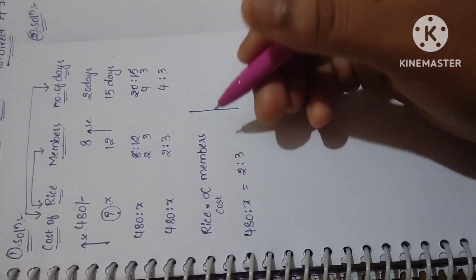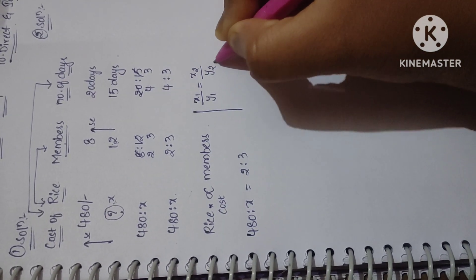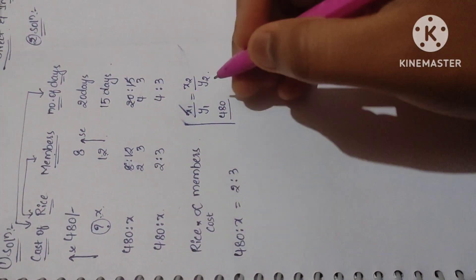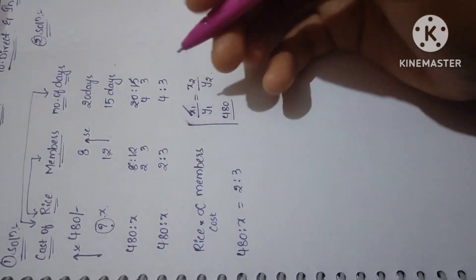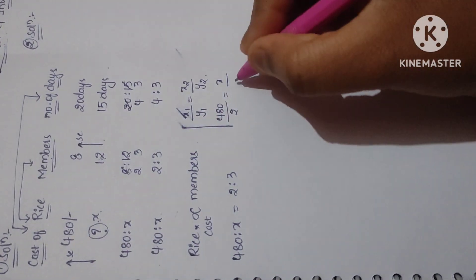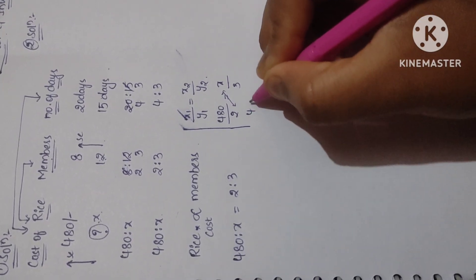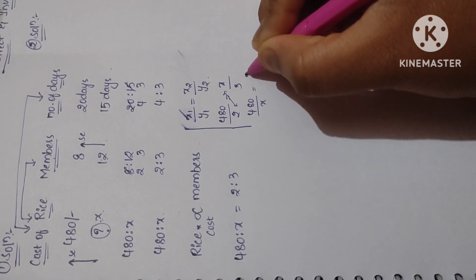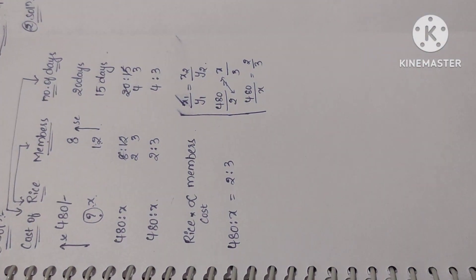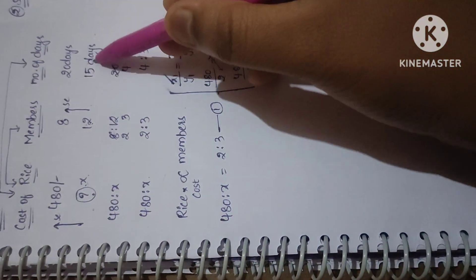Since it is direct proportion, we write the members ratio as-is: 480 is to x equals 2 is to 3. Using the formula x1/y1 = x2/y2, with x terms as cost of rice and y terms as members: 480/2 = x/3, which rearranges to 480:x = 2:3. Take this as equation 1.